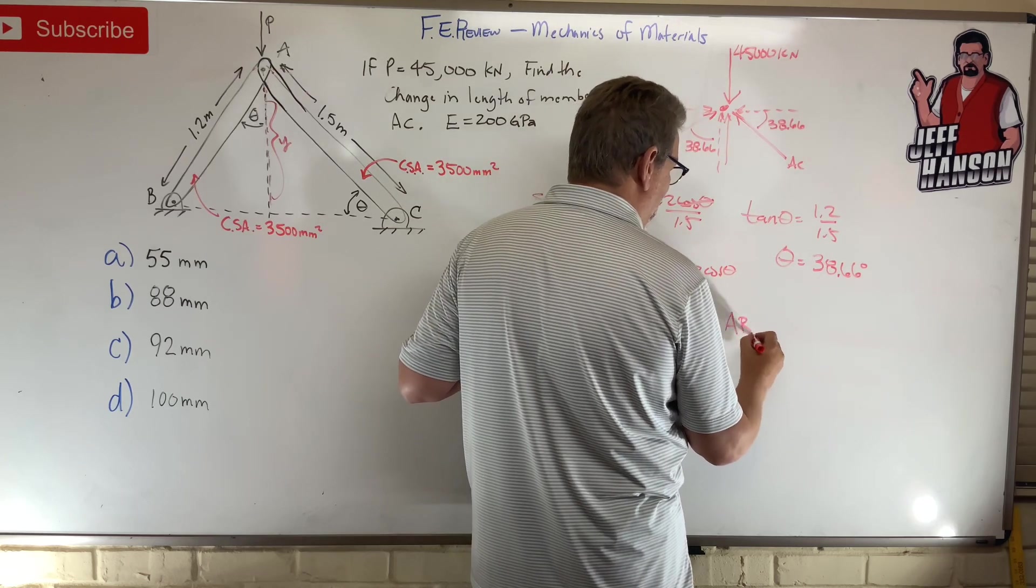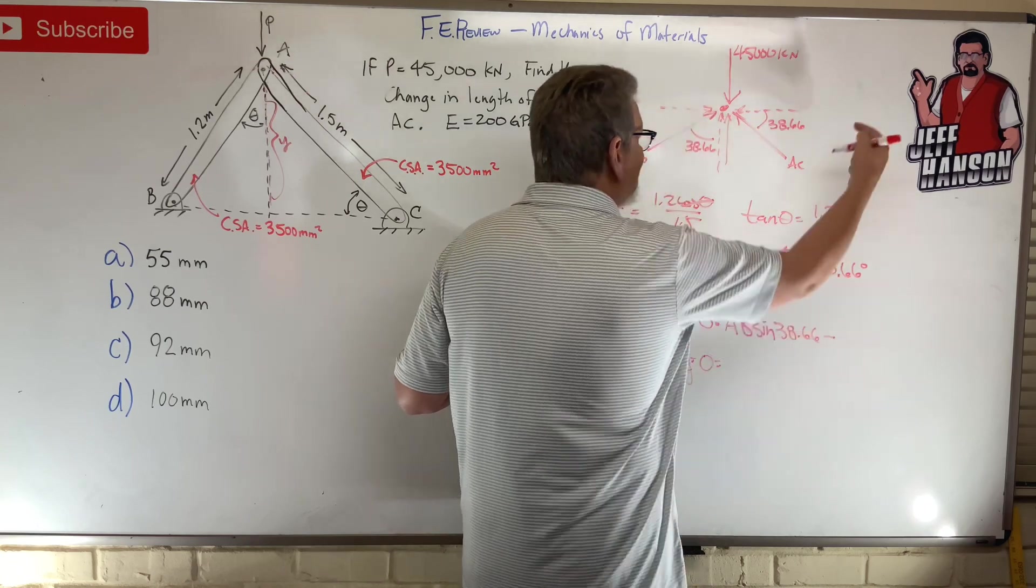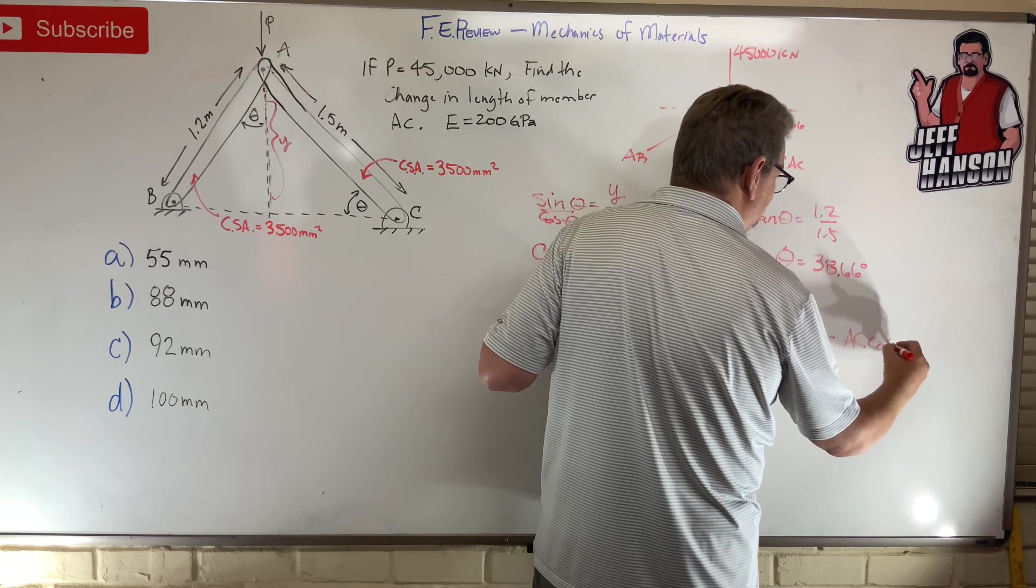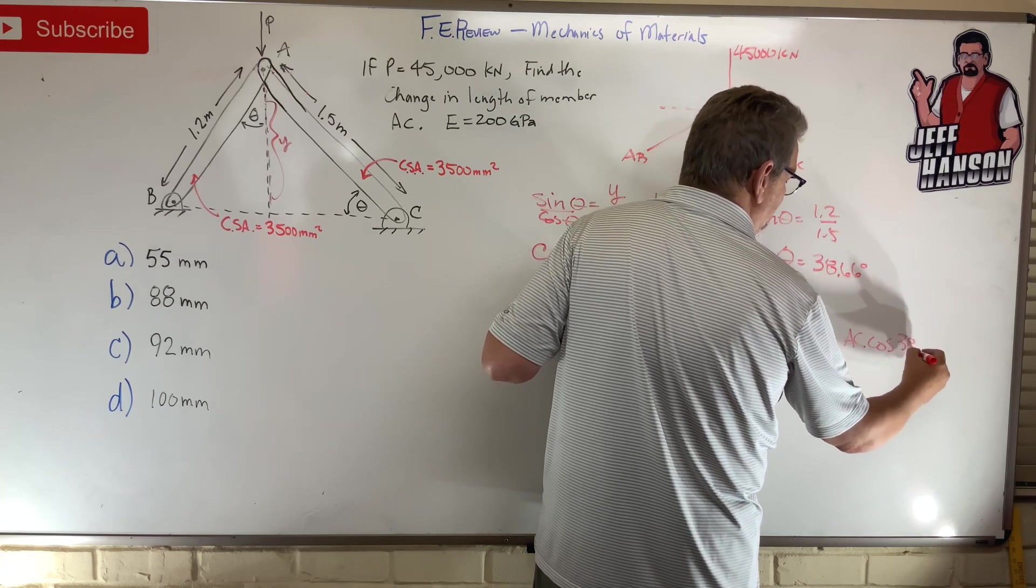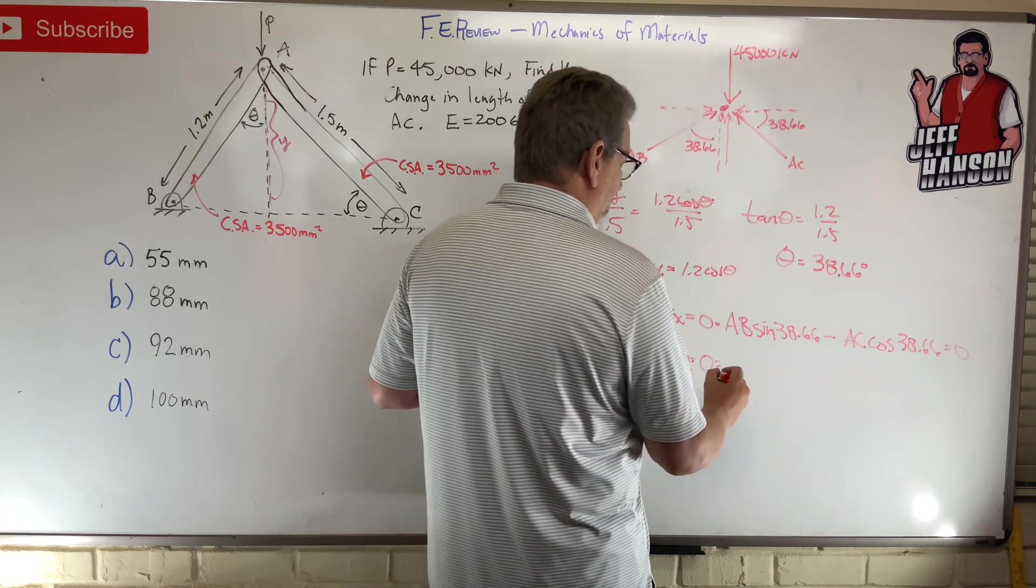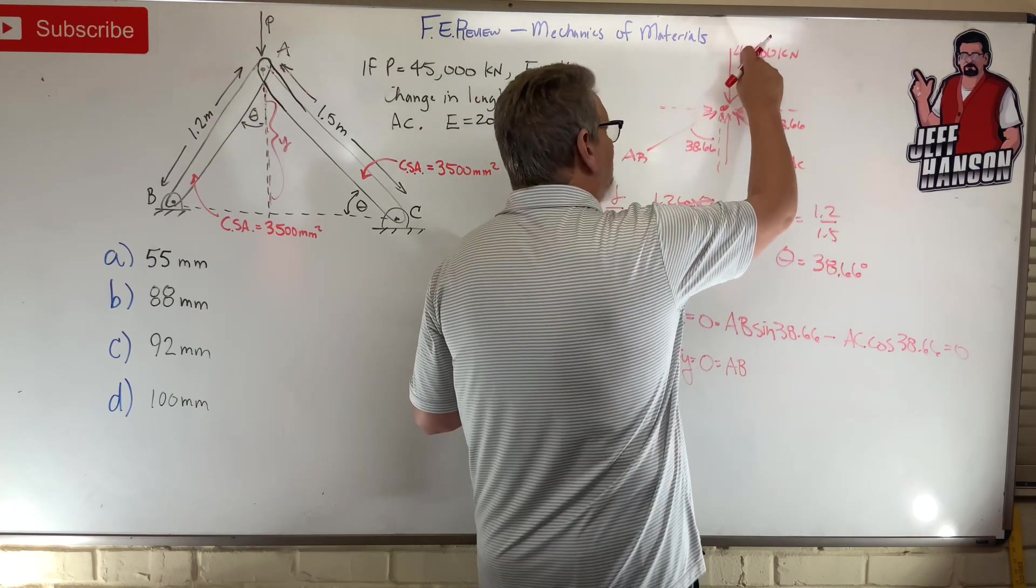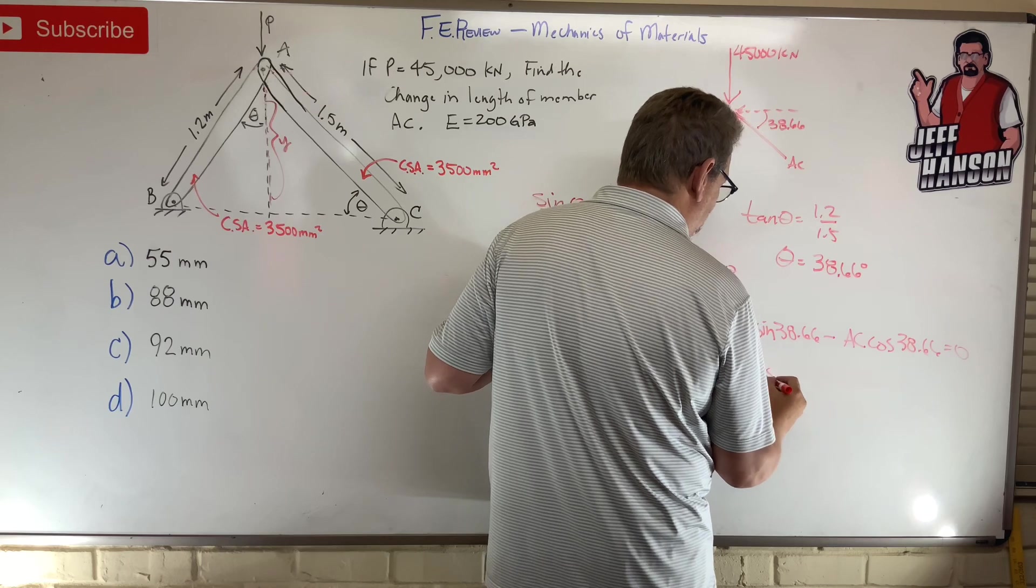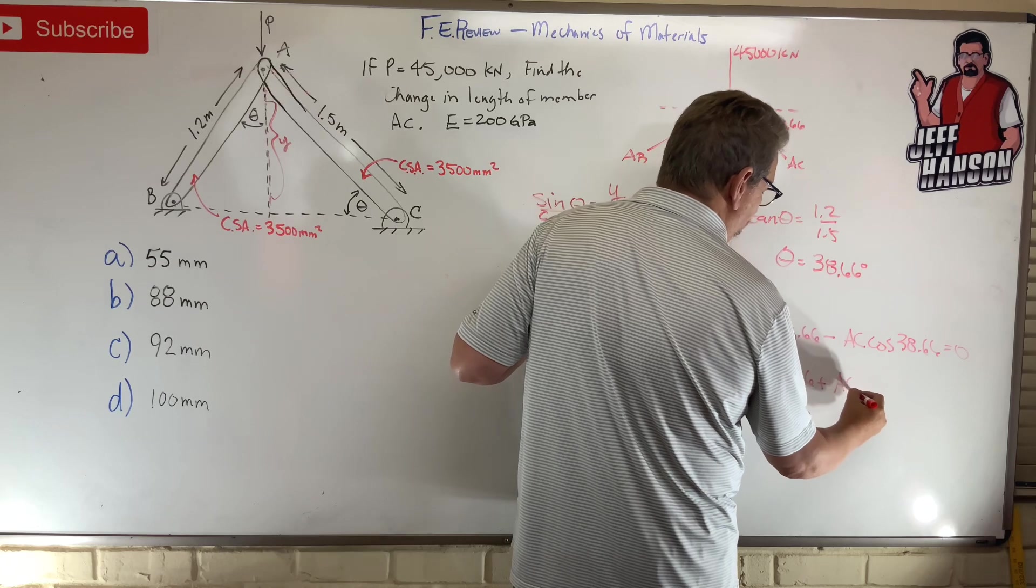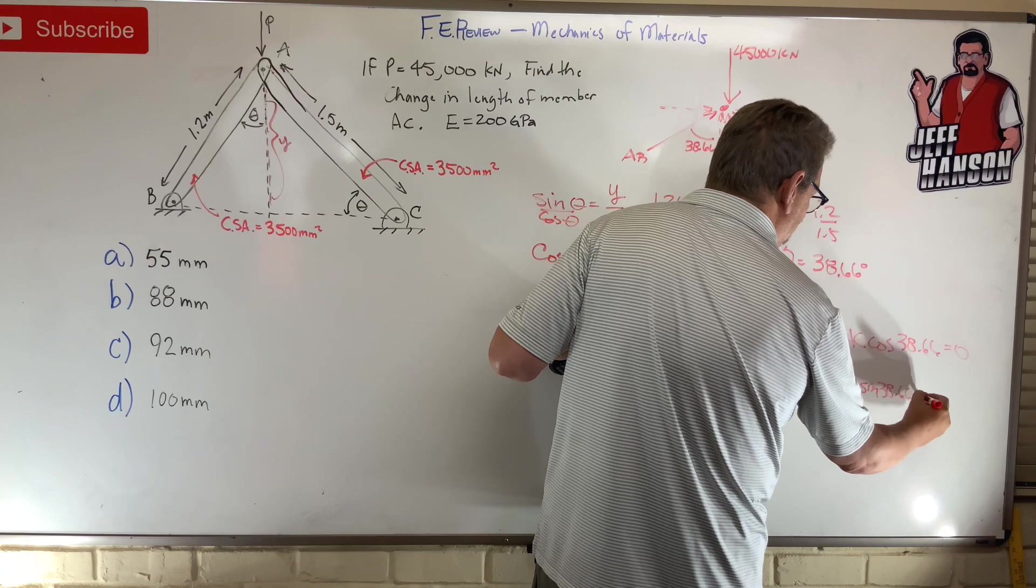Okay, in the x, what do we got? I got that guy which is AB sine 38.66 minus this guy, AC cosine 38.66 equals zero. And then AB going uphill, I got two going uphill, and then that guy going downhill, cosine 38.66 plus AC going uphill sine 38.66 equals 45,000.